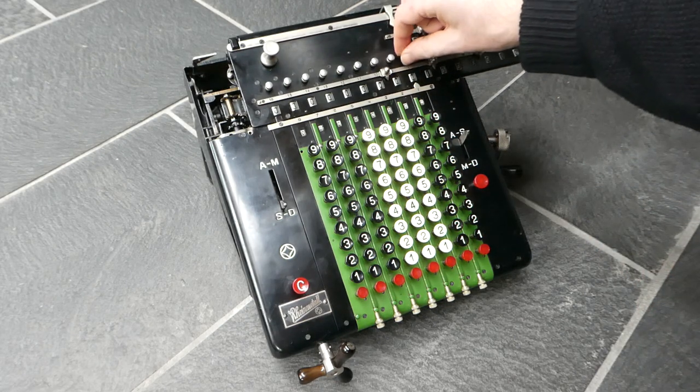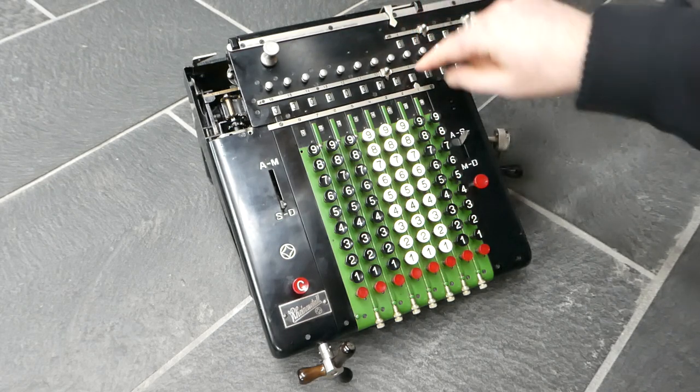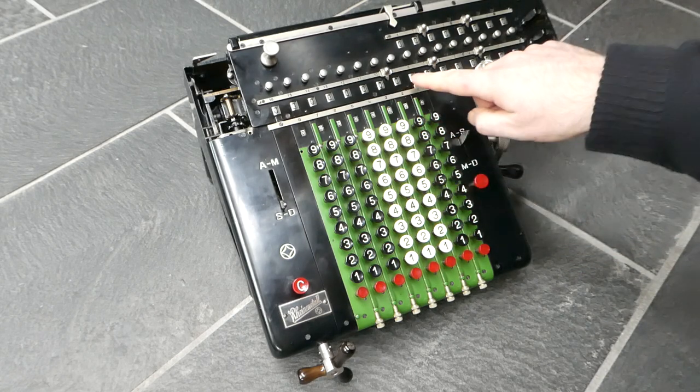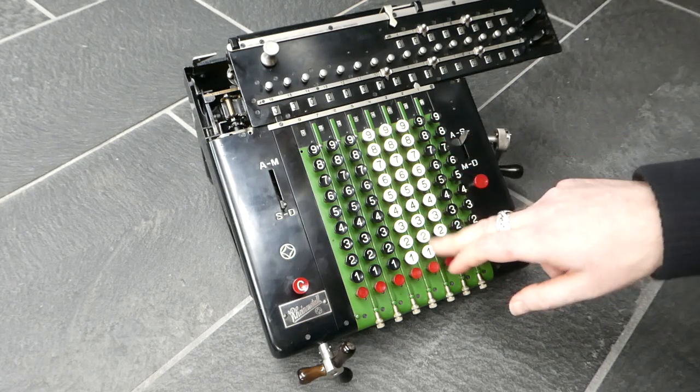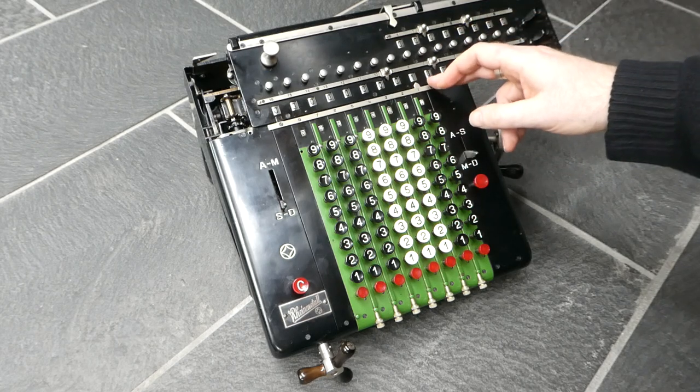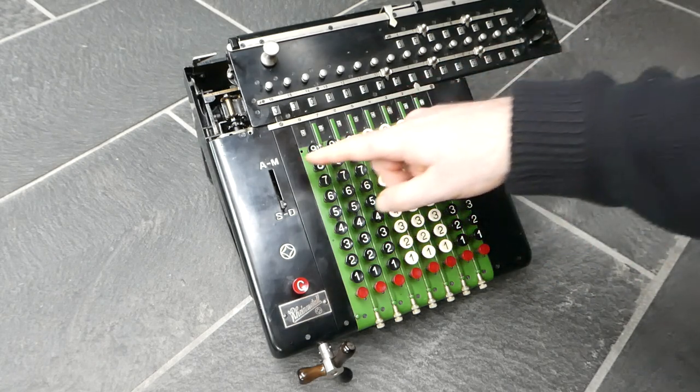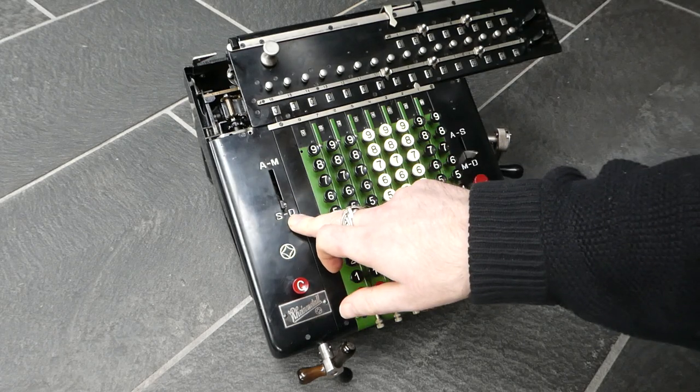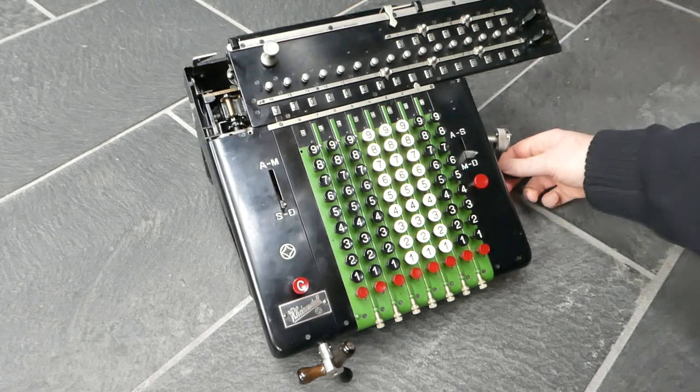These knobs here allow you to enter any input you like. I'll just input one. So there's one in the register. I'll put seven on the keyboard. And now I'm going to divide one by seven, so one seventh. I've put this lever down to subtract and division. And that's all there is to it. Now I just have to turn the crank.